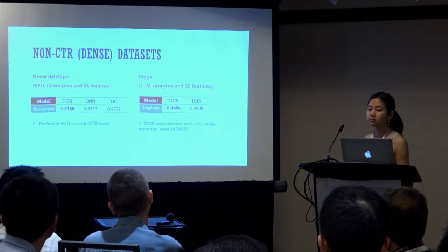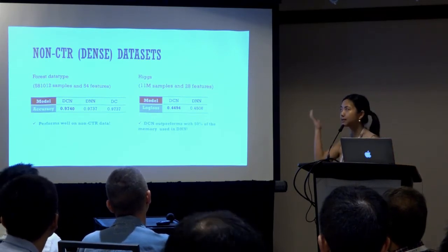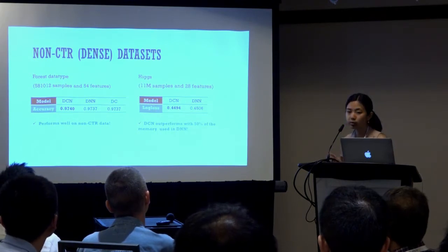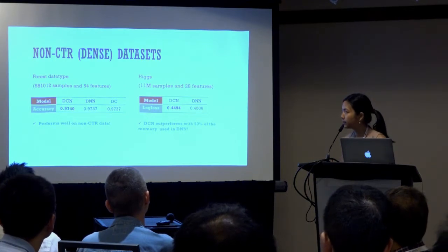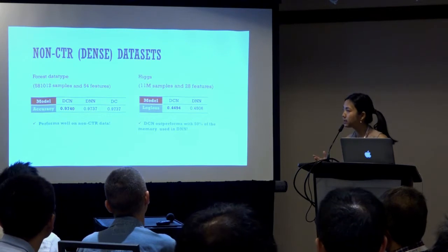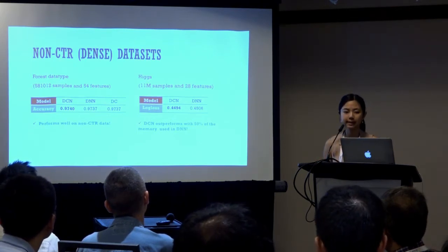Let's also look at some non-CTR datasets, which are dense datasets. On the left is the Forest Cover Type data, where we report accuracy — higher is better. On the right is the Higgs dataset, where we report log loss — lower is better. We see that DCN also performs well on non-CTR datasets.